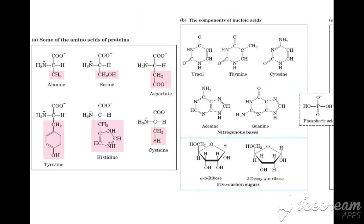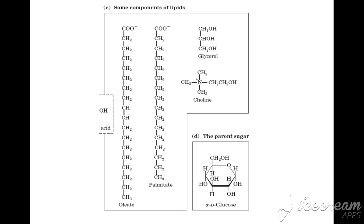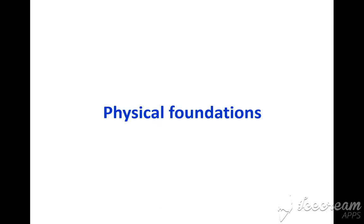Components of nucleic acids and some proteins include amino acids such as alanine, serine, and aspartate, which have their own functional groups. Some components of lipids are also part of the chemical foundation.